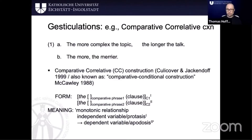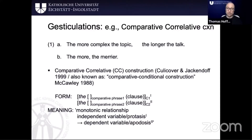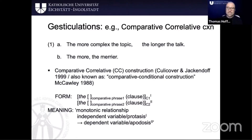One thing where I did a study on multimodal construction grammar is comparative correlatives. So you have sentences like the more complex the topic, the longer the talk; the more you eat, the fatter you get; the more the merrier. These are known as comparative correlative constructions.